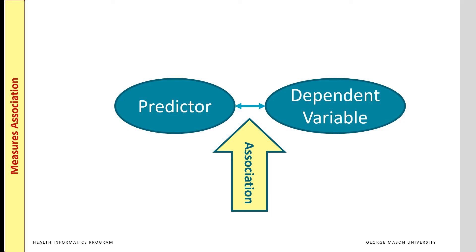Likelihood is a common statistical concept and is widely used. In probability theory, likelihood ratio is used to indicate how informative knowledge of one piece of information will be for predicting another event. Let's call the variable that we want to predict the dependent variable, and all other variables predictors.